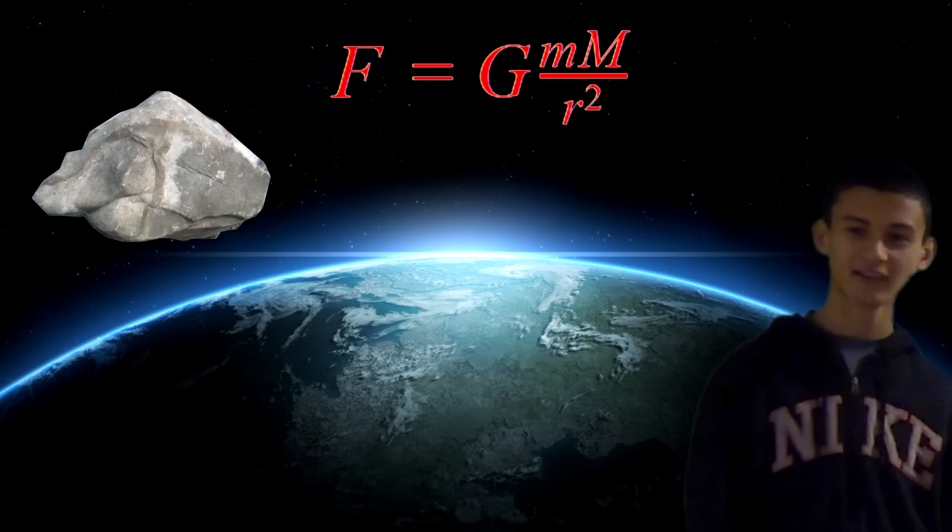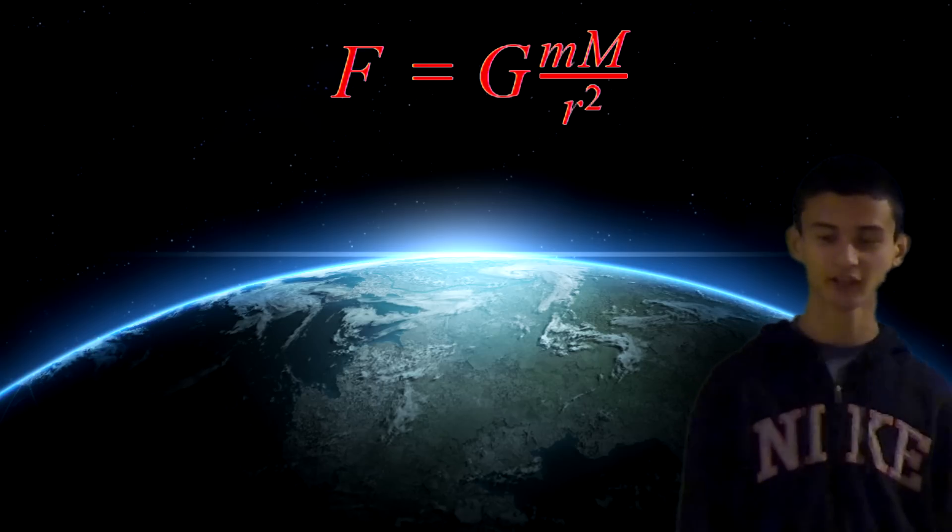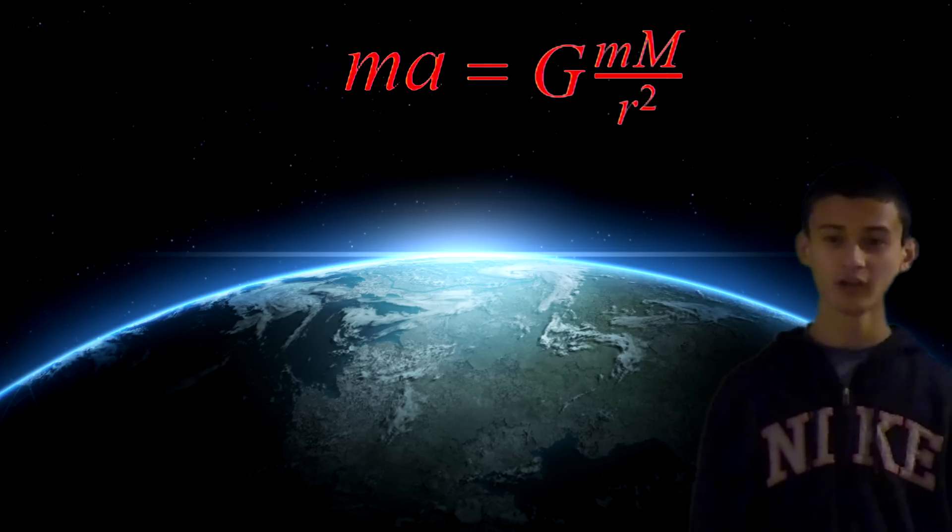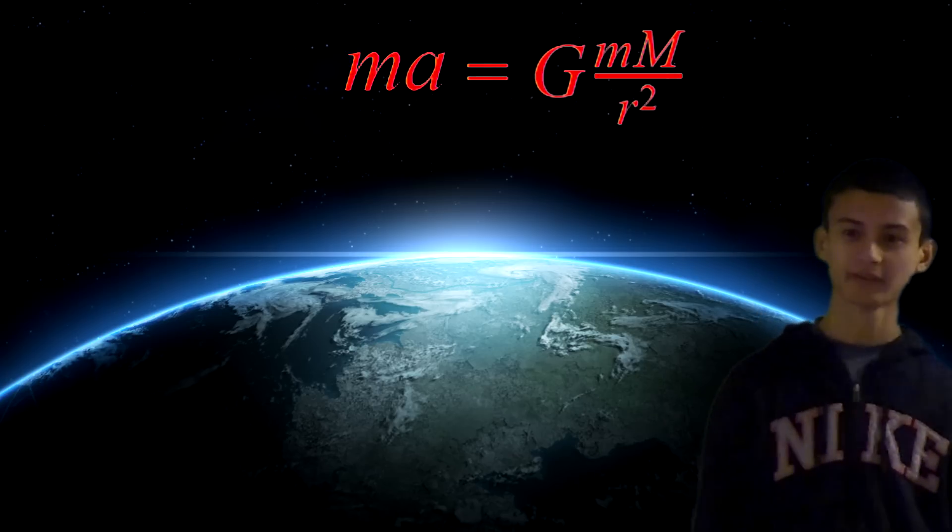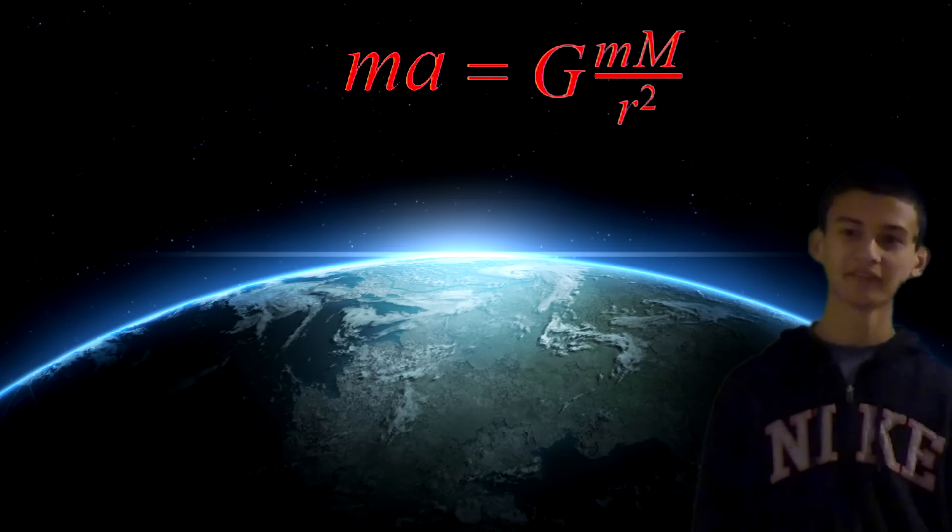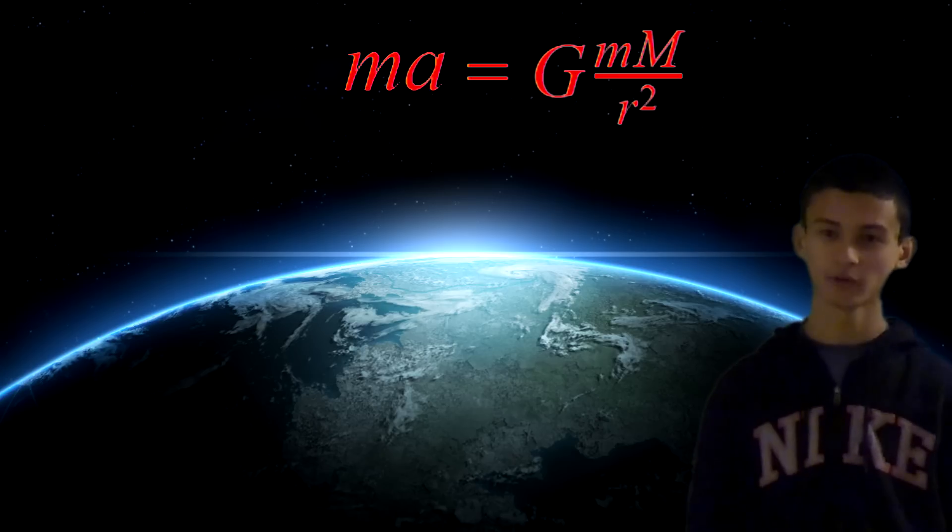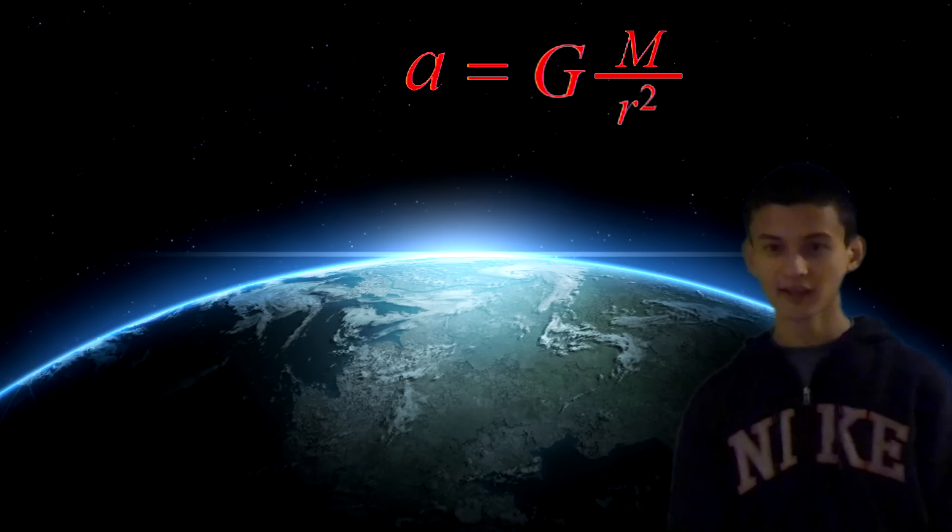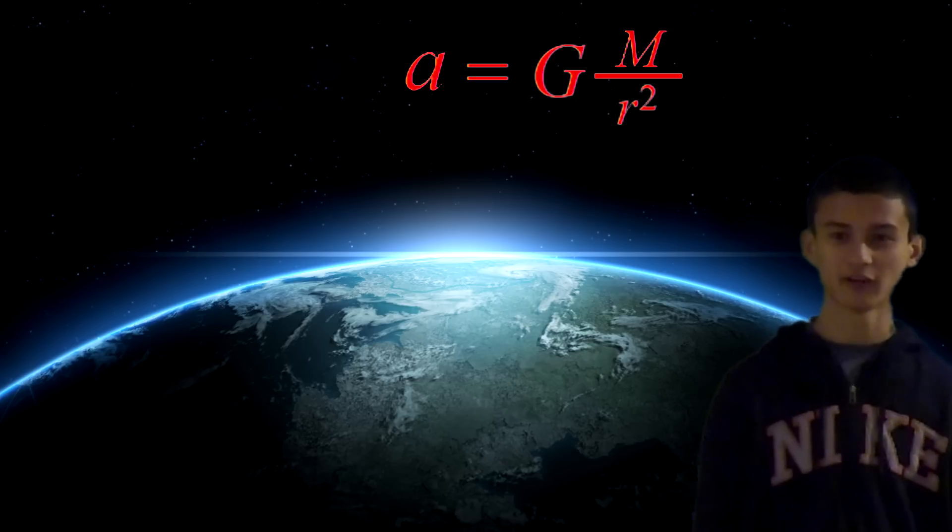From this, we can determine the acceleration of the object using Newton's second law of motion, F equals ma. If we substitute this equation for F, we get the mass of the object times acceleration equals G times the mass of the object times the mass of the Earth over r squared. If you look at this equation, the mass of the object actually cancels out. This implies that the acceleration due to gravity on Earth for any object is the same.